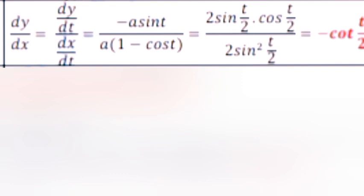Question 18.2: x = a(t − sin t), y = a(1 + cos t). Answer: dy/dx = (dy/dt)/(dx/dt) = −a sin t / [a(1 − cos t)] = [2 sin(t/2)cos(t/2)] / [2 sin²(t/2)] = −cot(t/2).